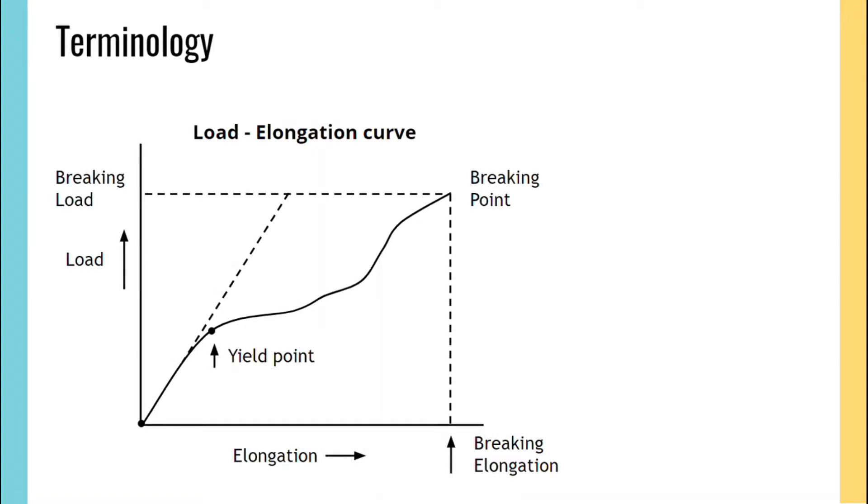The point at which the fiber breaks is called the breaking point, and that load is termed the breaking load. The elongation at that point is termed the breaking elongation. Stress equals force upon area, and strain equals elongation upon initial length.